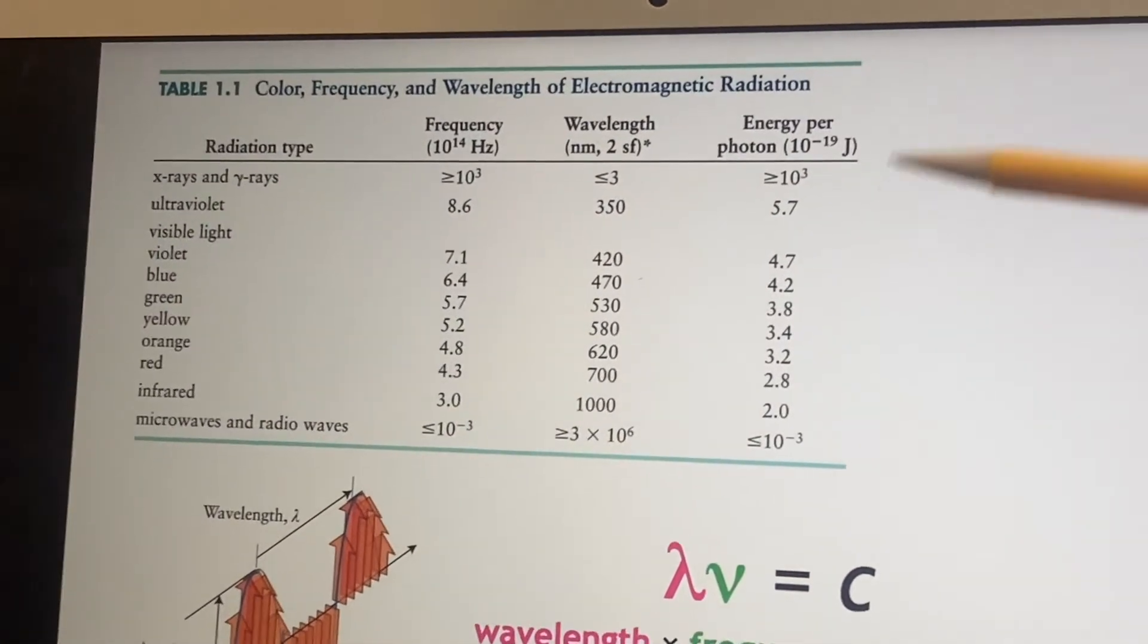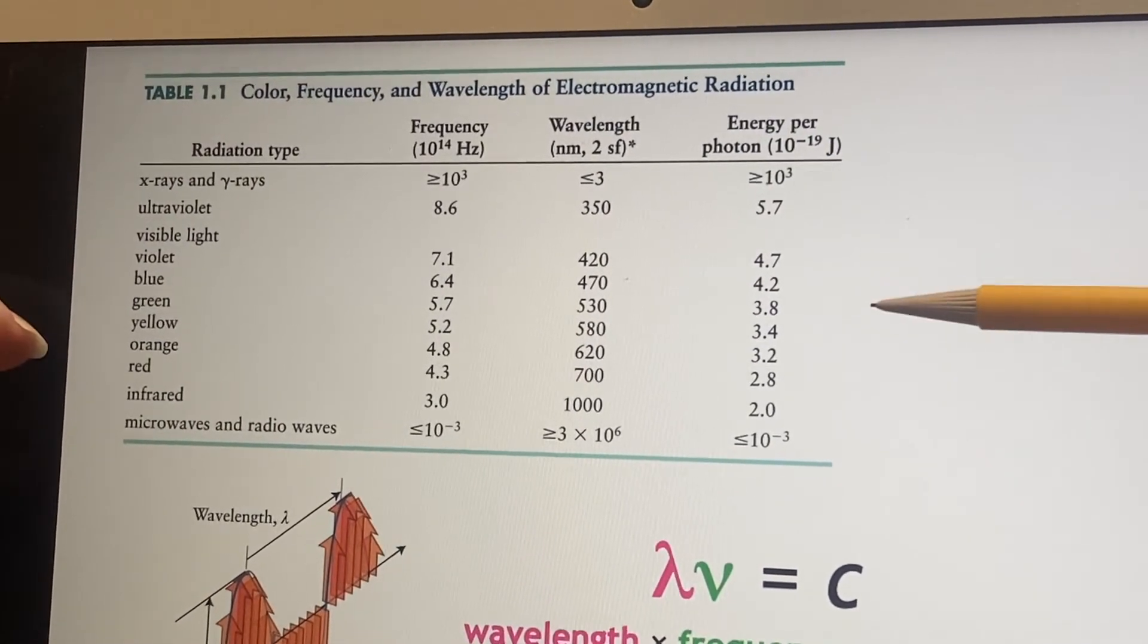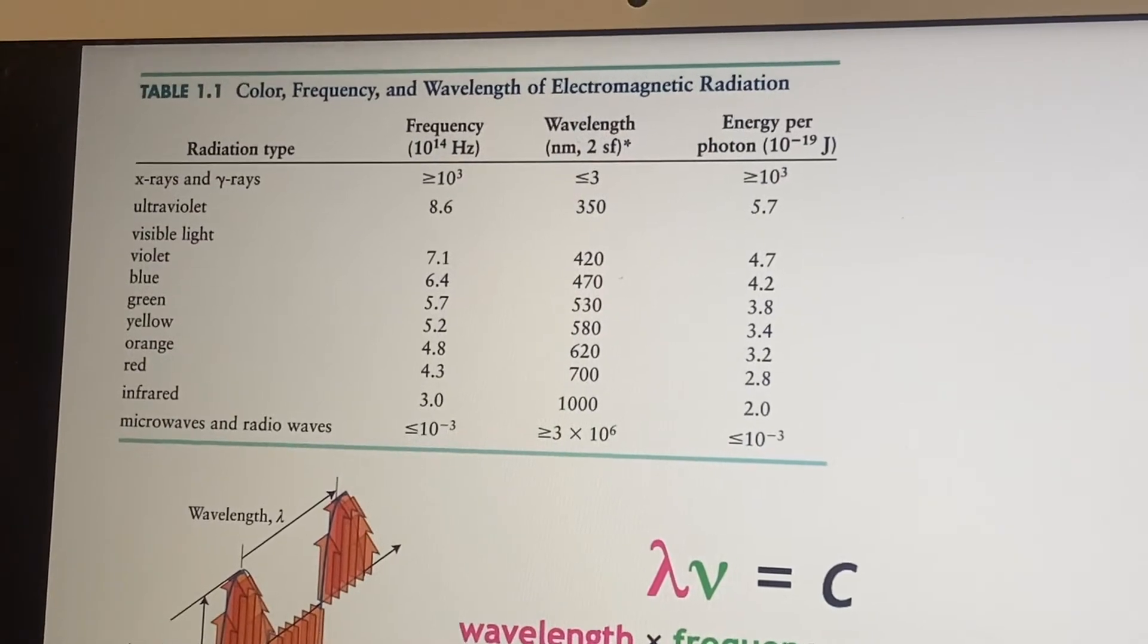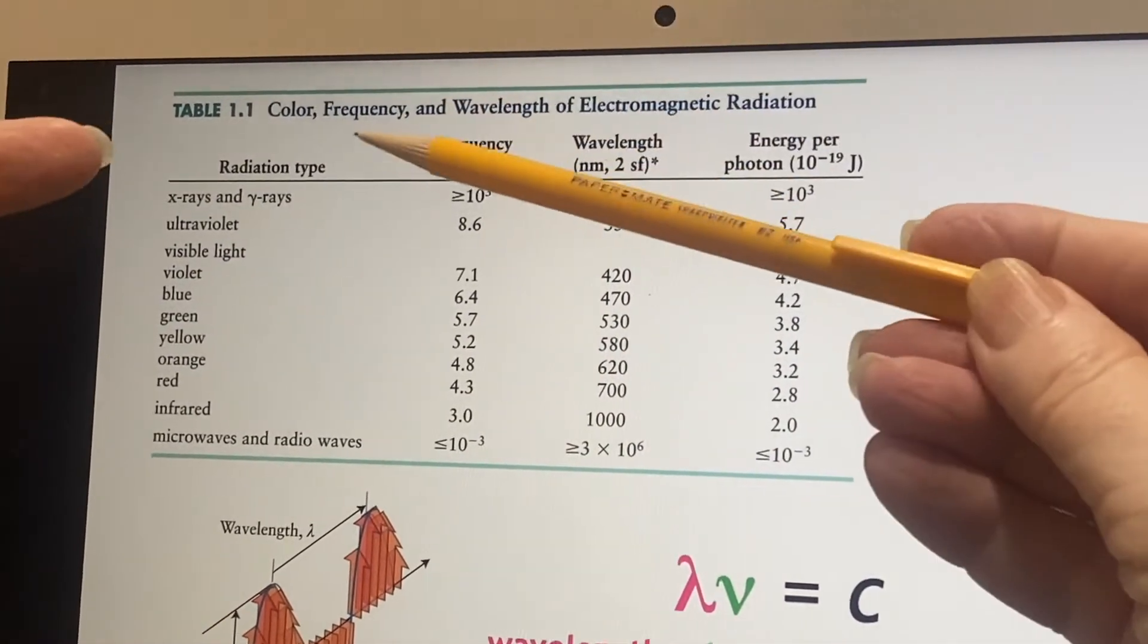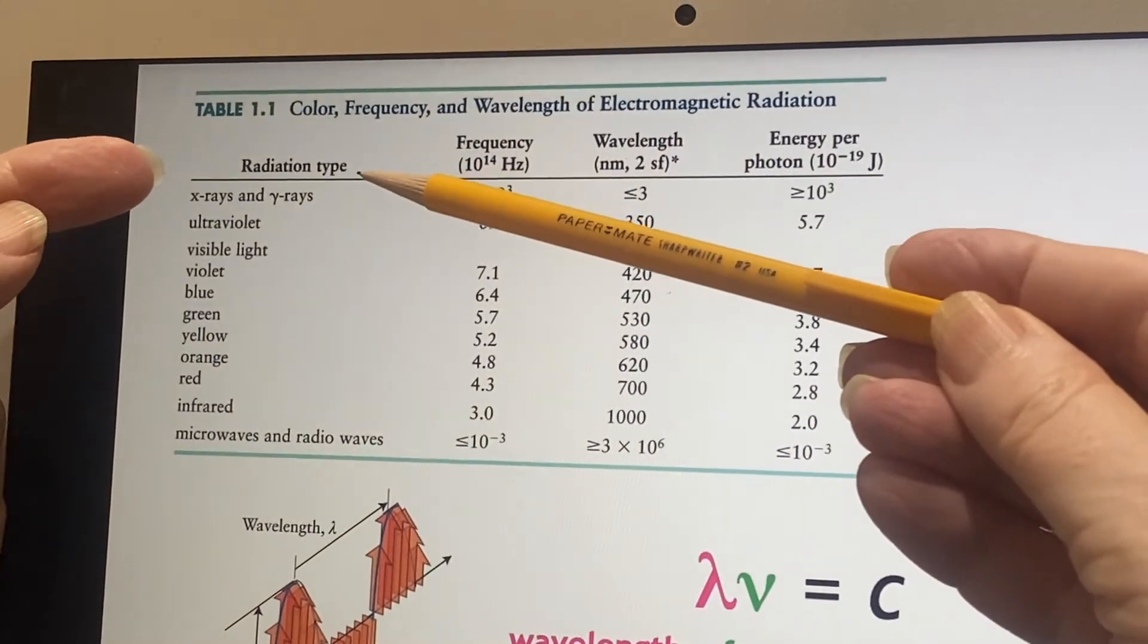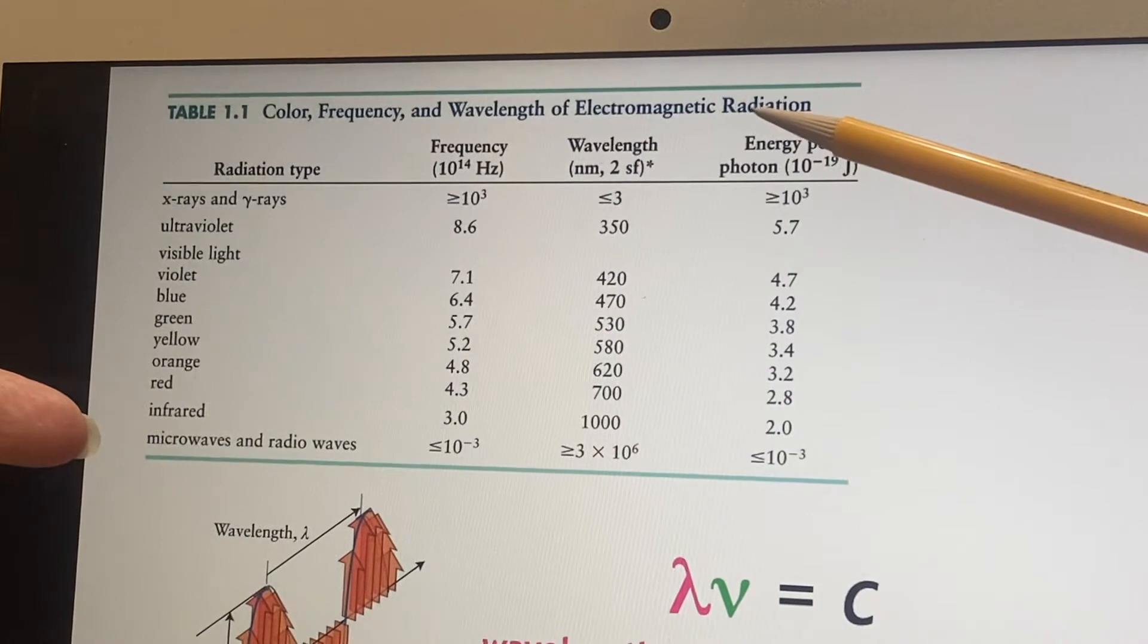I apologize for the obliqueness and opacity of this particular table because it's a little bit much to take in. So let's just start by looking at just one column at a time. This first column talks about the different types of radiation. These are all electromagnetic waves, all of them.